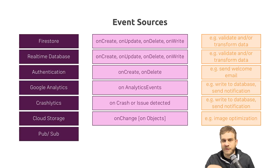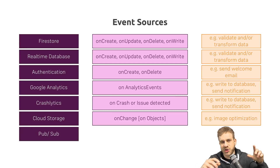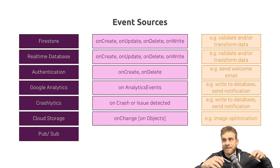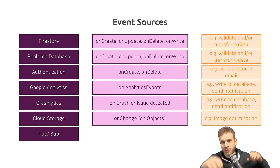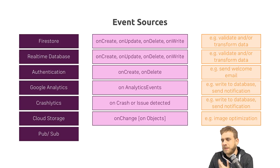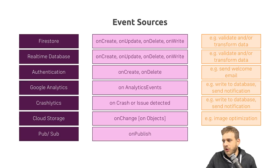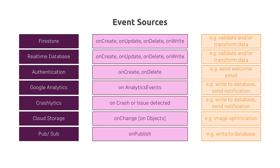PubSub is another service offered by Firebase. It's basically a service which allows you to send a message to which other services in your Firebase environment can listen. Whenever you publish such a message, the onPublish trigger fires and you can use that to do something additional, like write extra information to the database.